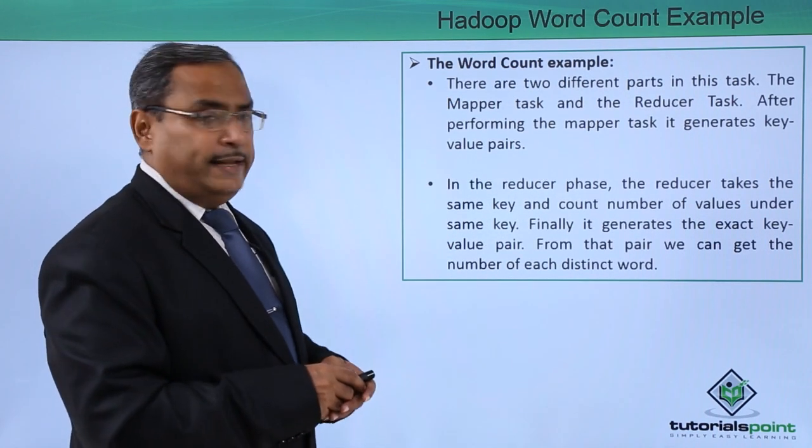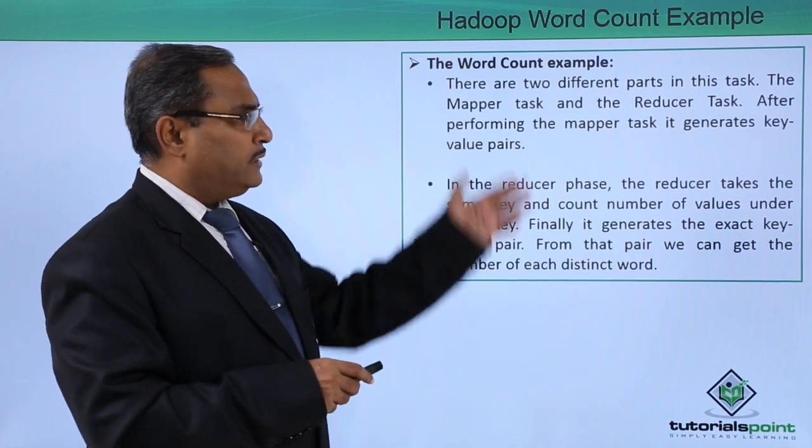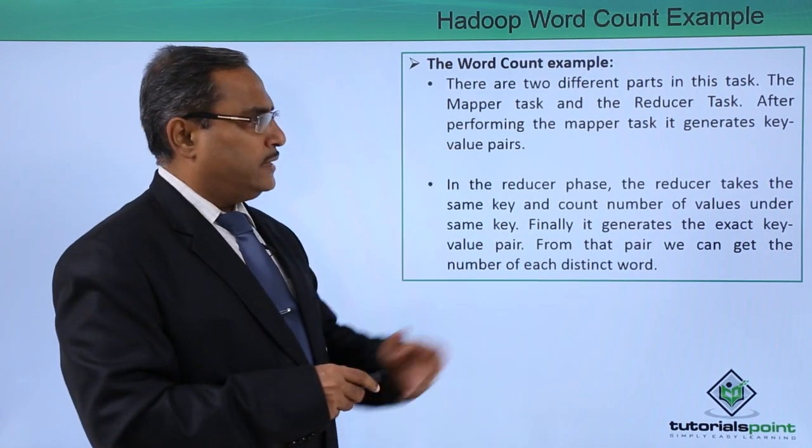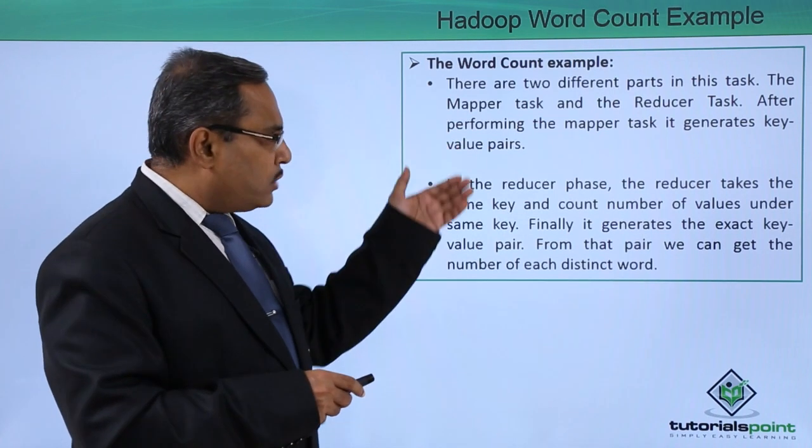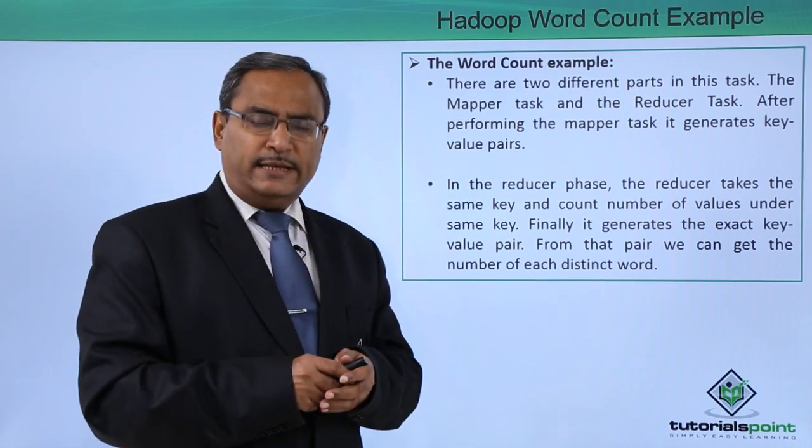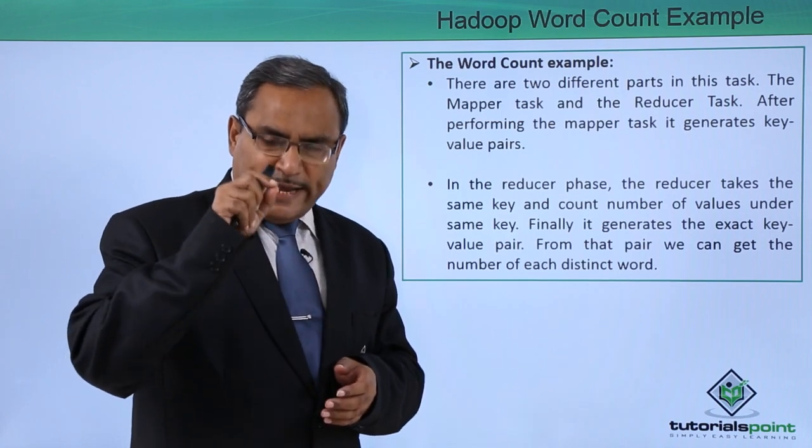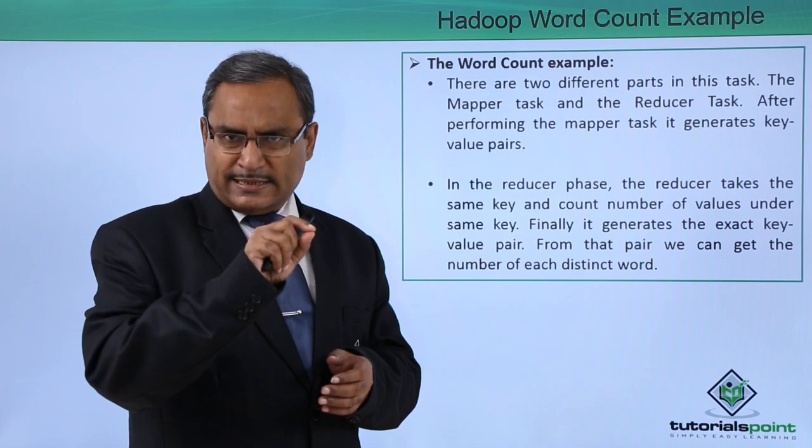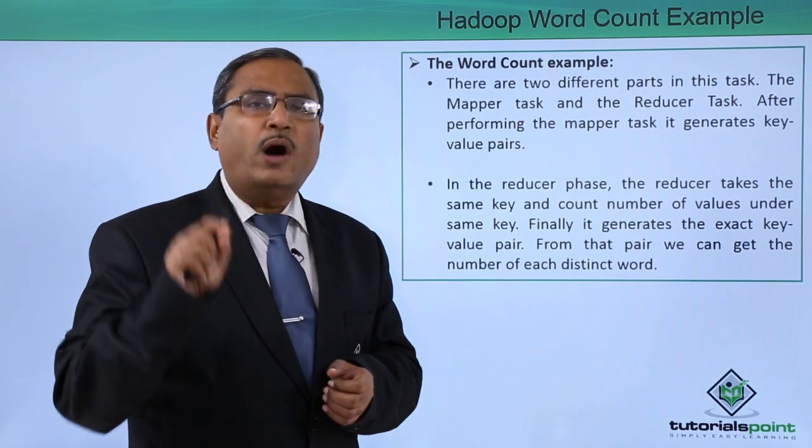There are two different parts in this task: the mapper task and the reducer task. After performing the mapper task, it generates key value pairs. The outcome of the mapper task will be something like this. That means it will go for each and every word and then it will produce the value against that key. The word will be the key and the value will be one.